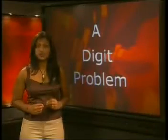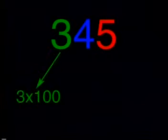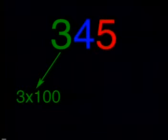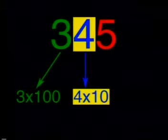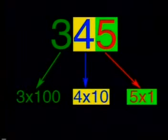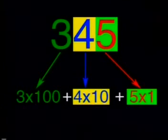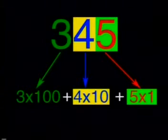To formally solve this problem we need to understand what is meant by the digits in a number. Consider the number 345. There are three digits, namely 3, 4 and 5. The digit 3 represents three hundreds and we write 3 times 100. The digit 4 represents 4 times 10, and 5 represents 5 units. So the numerical value of the number can be written as 3 times 100 plus 4 times 10 plus 5 times 1.